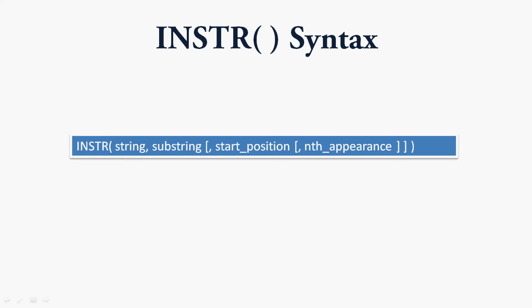The first parameter is the string — this is the string in which we are going to search for the position of the given substring. The next parameter is the substring — here we specify the substring to search within the given string. The next parameter is start position, which is an optional field where the search will begin in the string.